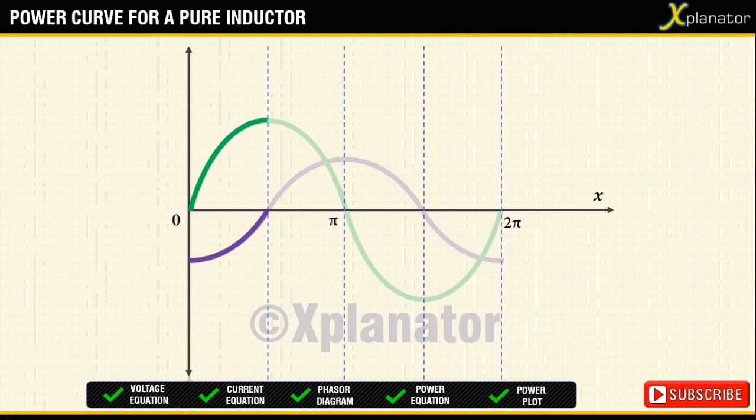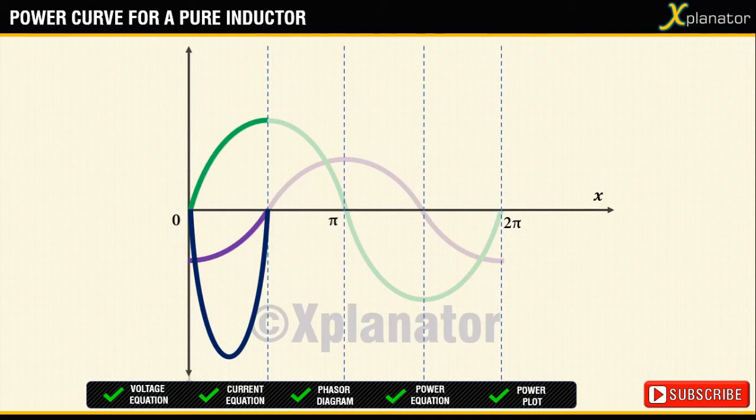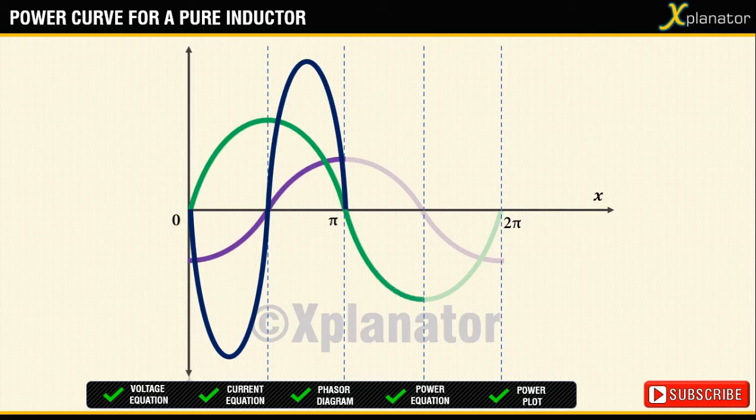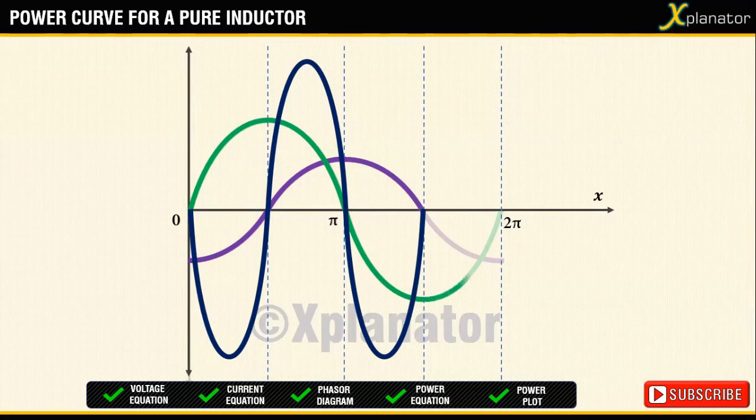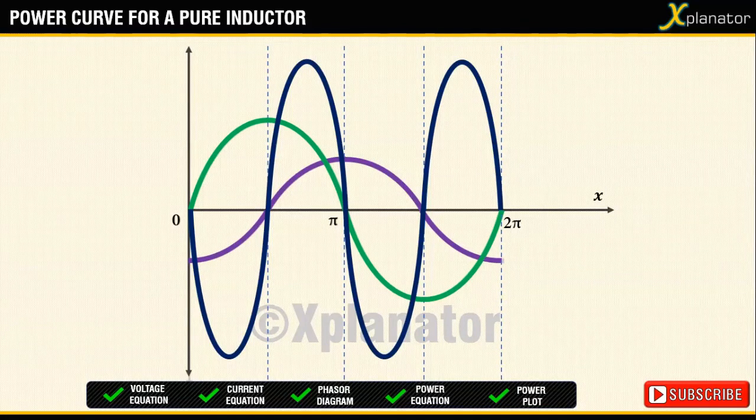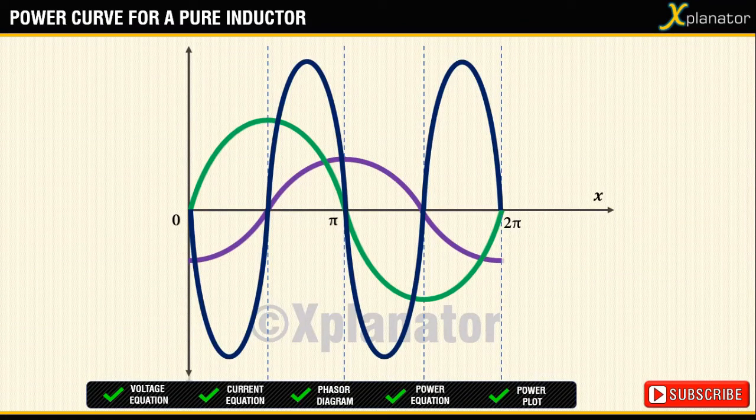So plus V and minus I will give minus P, plus V plus I will give plus P, minus V plus I will give minus P, and minus V and minus I will give plus P. And you can see that the sinusoidal pattern is symmetric about the x axis.